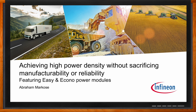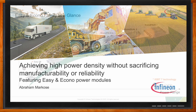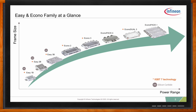Hi Abe, thank you so much for joining me. So we're talking about how we can achieve high power density without sacrificing reliability or manufacturability with the Easy and Econo power modules. Can you set the stage and give us an overview of these two families? Here's an overview of our Econo and Easy family of modules — this gives you a good idea of what the product family looks like and the power ranges it can serve. For today's presentation, we're going to focus on the Easy 1B, the 2B, and the EconoDual 3 modules.